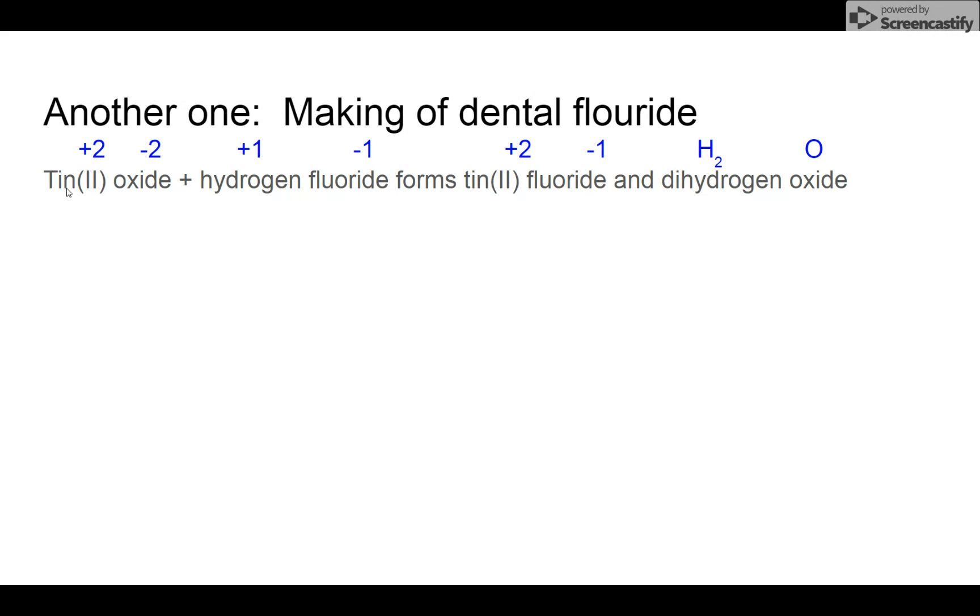There's no way I could have tin 2 oxide and hydrogen fluoride makes gold chromate. So you only have to look up the valences on one side because everything has to be on the other side. And dihydrogen oxide, the last one told you what it is. Two hydrogens, one oxygen. So we convert it to a formula.